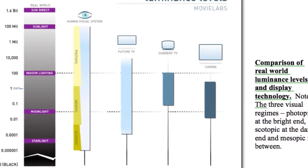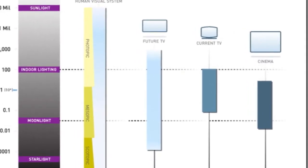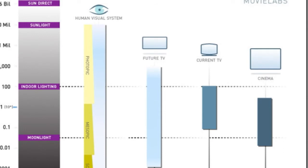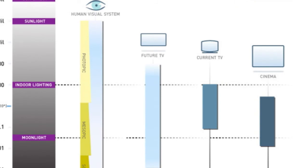Current TV doesn't even cover the full range to which the human eye can be adapted at any one particular time. And creatively, as a director, you'd like to take the audience through dark and light adaptation — maybe have a really dark room where their vision slowly comes back, or the startling experience of suddenly entering a bright environment. You really want to capture at an absolute minimum the current adaptation range that's possible, but ideally go beyond that.